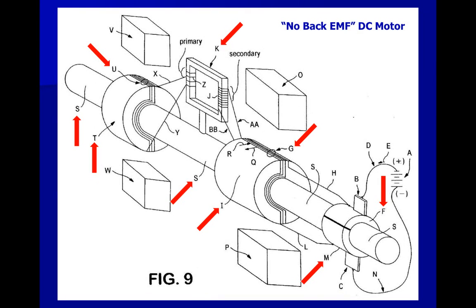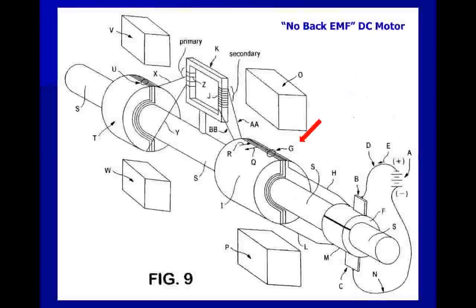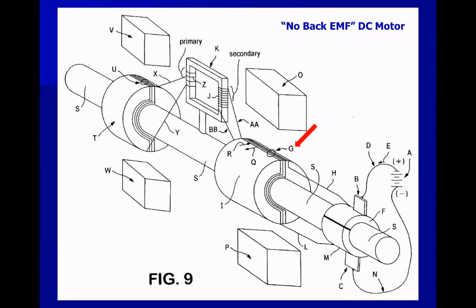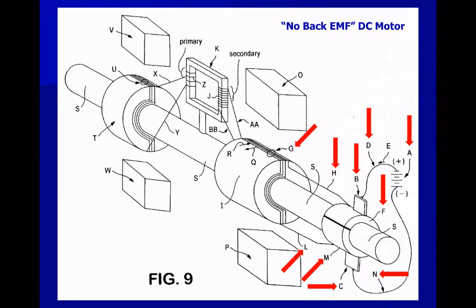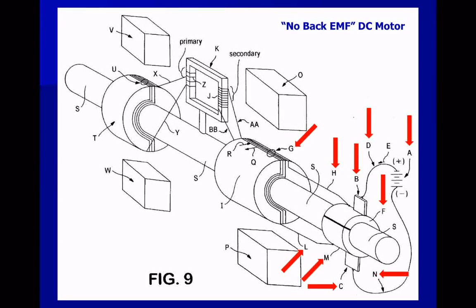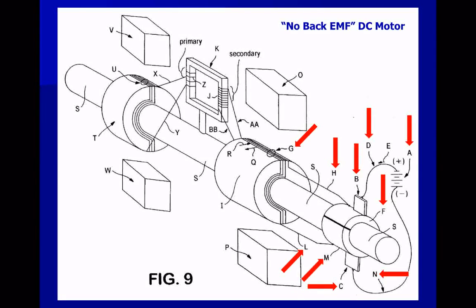All components that are not rotating are stationary — for example, the stators are stationary. As the main armature windings G rotate at velocity omega, they move through the magnetic field lines, generating back EMF in the main armature windings G. This back EMF comes out of main armature windings G and appears on conductors H and L, commutator segments F and M, brushes B and C, conductors D and N, and on the positive and negative terminals of DC source A.